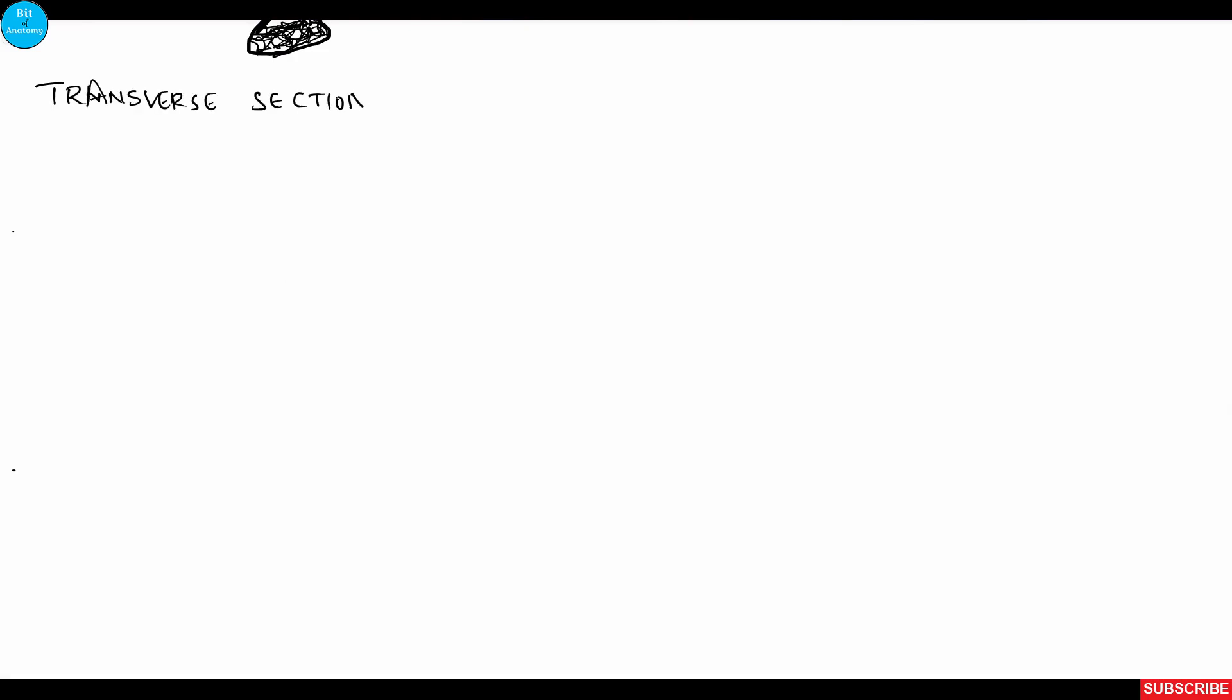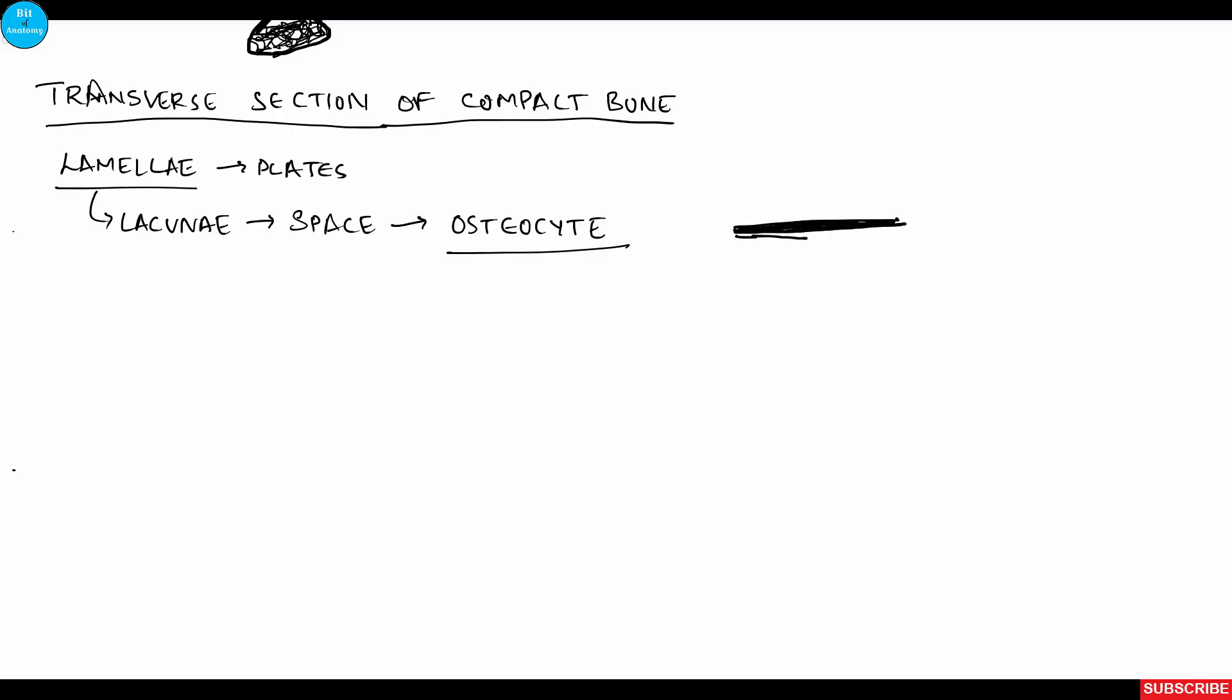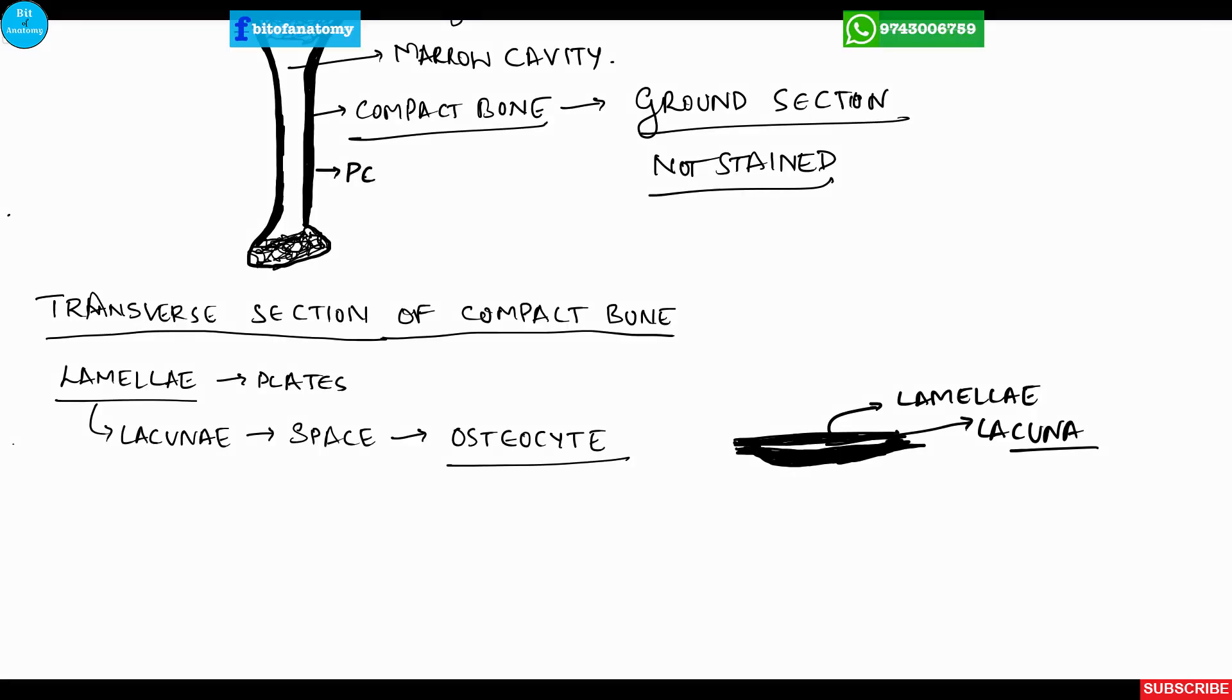In the transverse section of the compact bone we can appreciate the lamellar arrangement which is plate-like arrangement. Within the lamellar there are some spaces called lacunae which contains the osteocyte. The bone tissue is arranged in the form of plates which are called lamellar. The spaces in between are called lacunae.